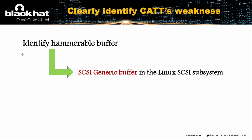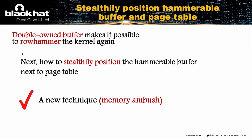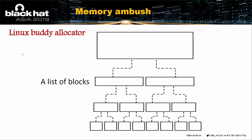Having identified CAT's weakness, we next need to stealthily position the hammerable buffer next to page tables. We proposed a new technique called Memory Ambush to address this. For the Linux buddy allocator, it maintains multiple lists of blocks. Blocks in the same list have the same memory size, and every block has a power-of-two number of pages that are physically contiguous. When a block is split into two equal blocks, the unused split block is linked into a smaller block list.